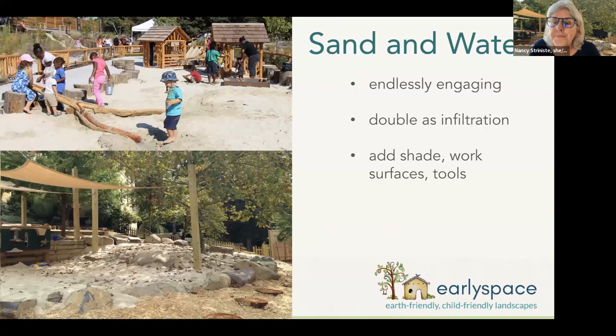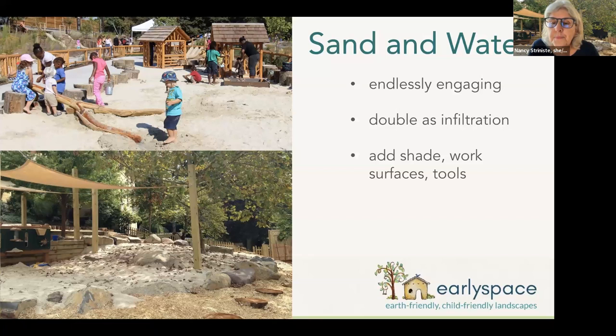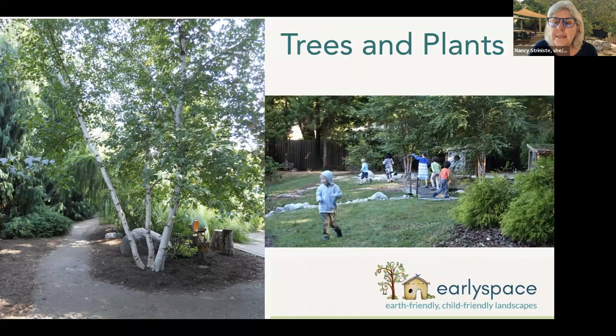Sand areas are endlessly engaging, especially when enhanced with vertical work surfaces, playhouses with pass-through windows, and shade sails. When sand areas are built to drain well, they can double as infiltration. At Constitution Gardens in Gaithersburg, Maryland, we excavated four feet and backfilled with two feet of coarse gravel and under drains, then topped that with two feet of play sand. Trees and other plants are key to the design of nature play spaces — they encourage us to use all of our senses, adding fragrance, motion and sound, color, texture, loose parts for play, and sometimes even edible elements. Trees and plants bring the life to a living schoolyard.